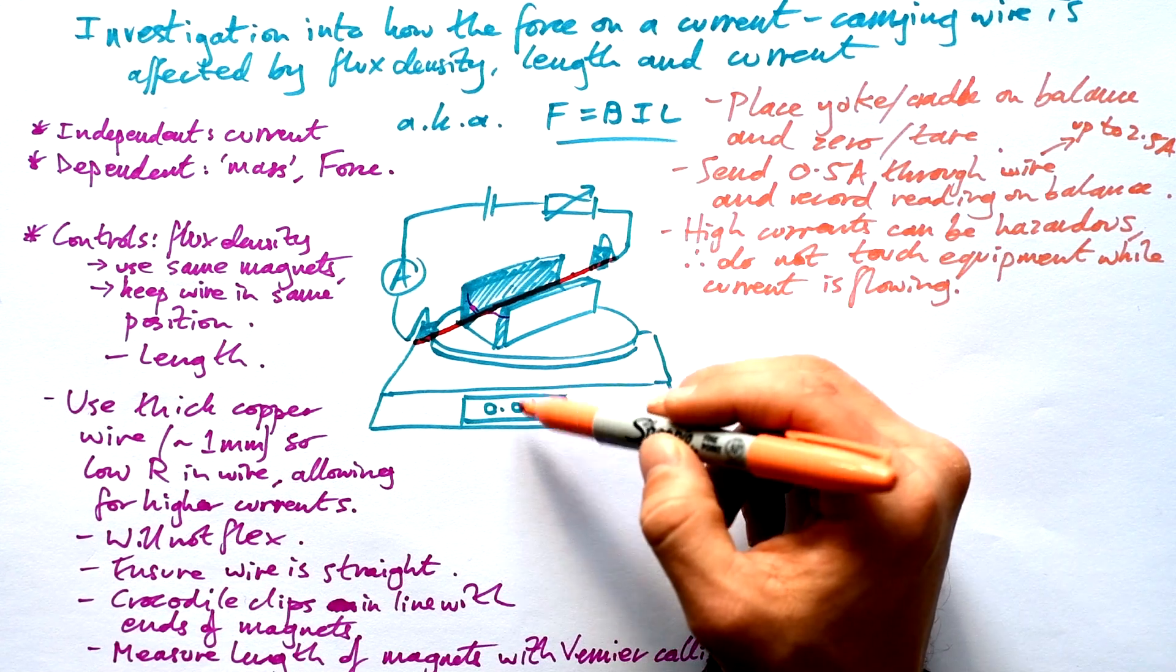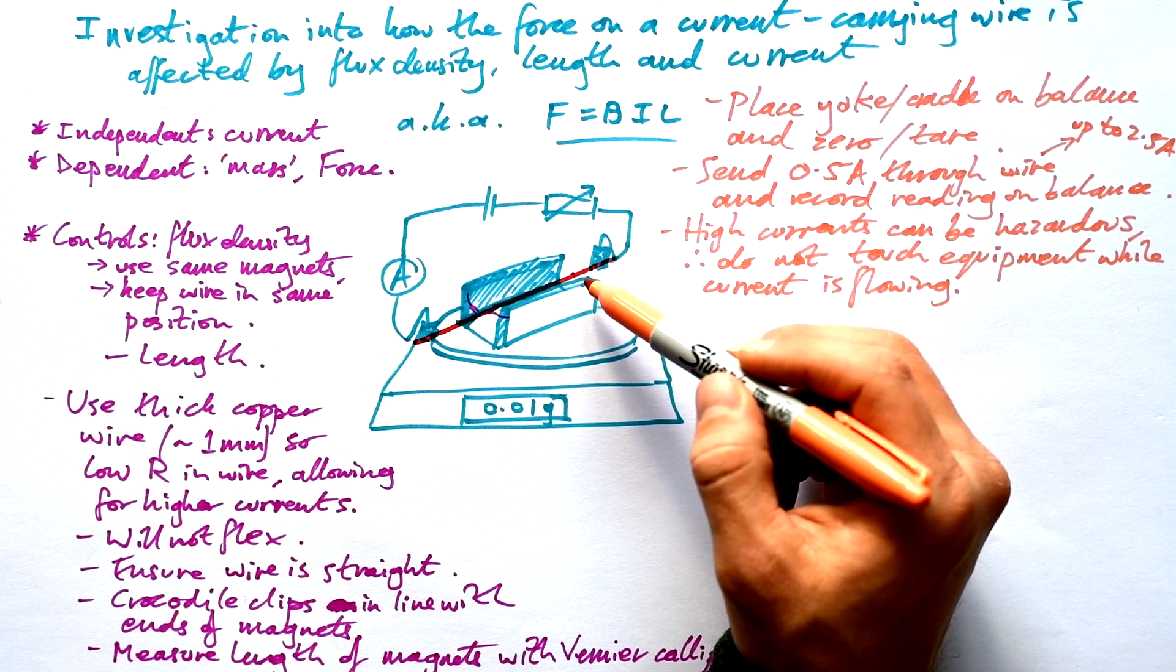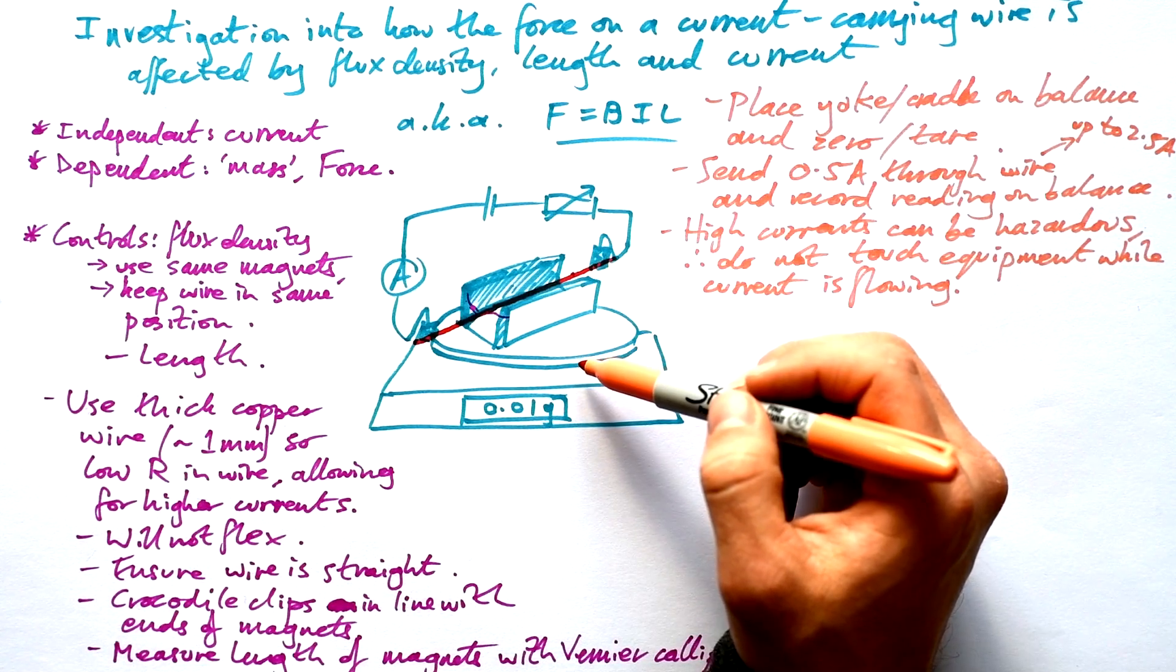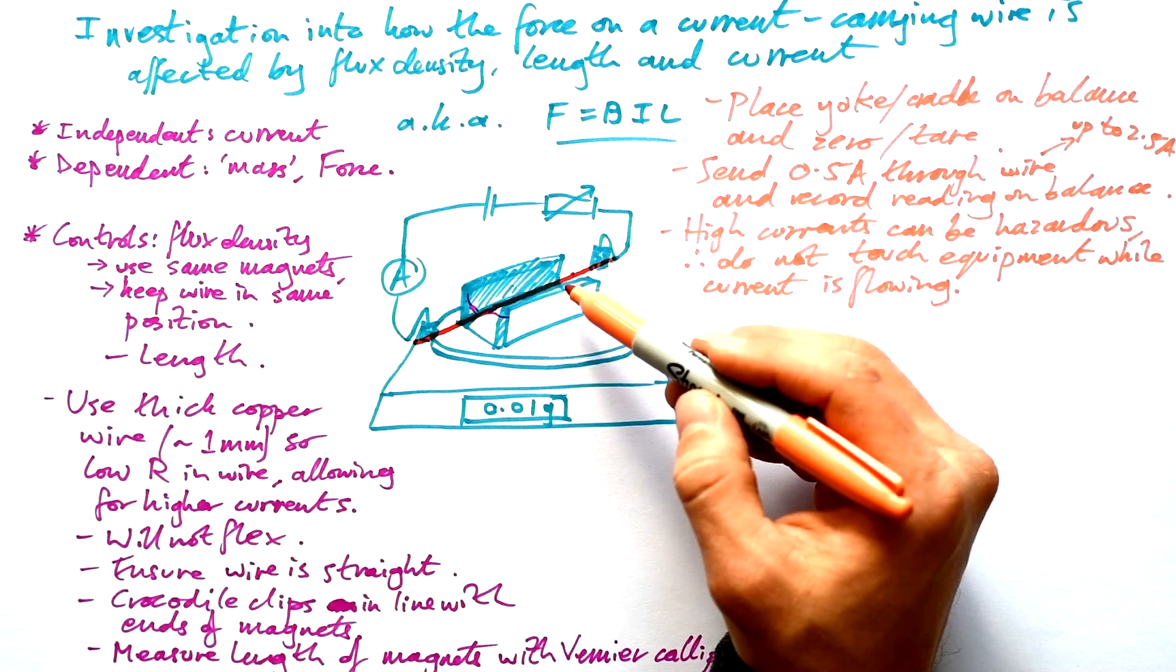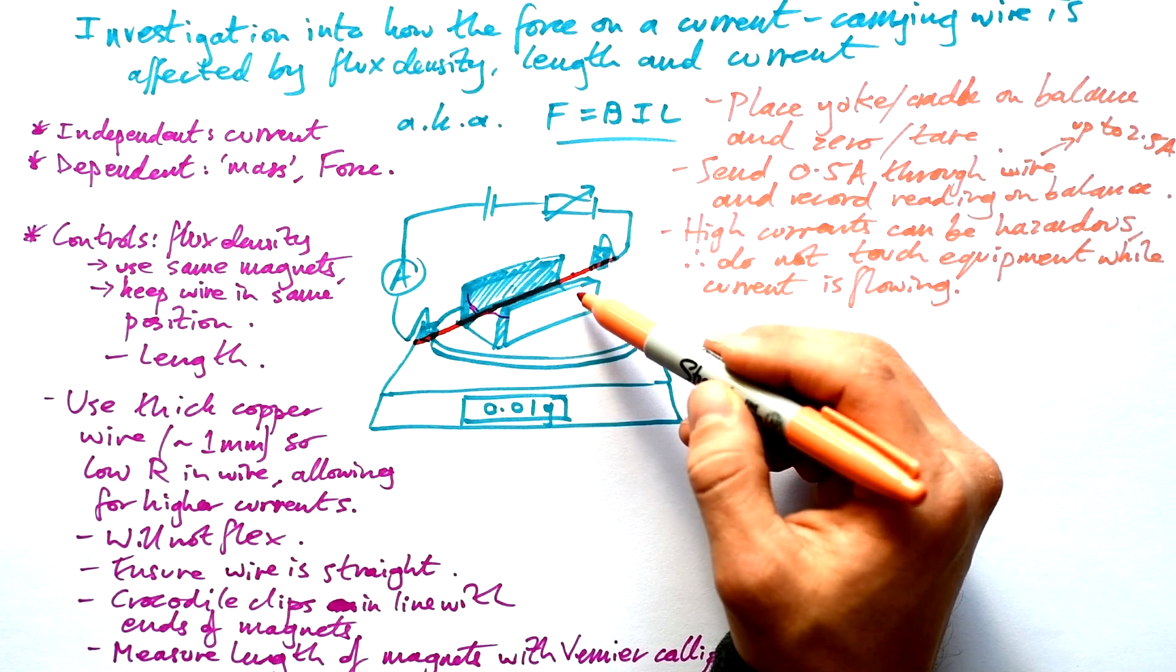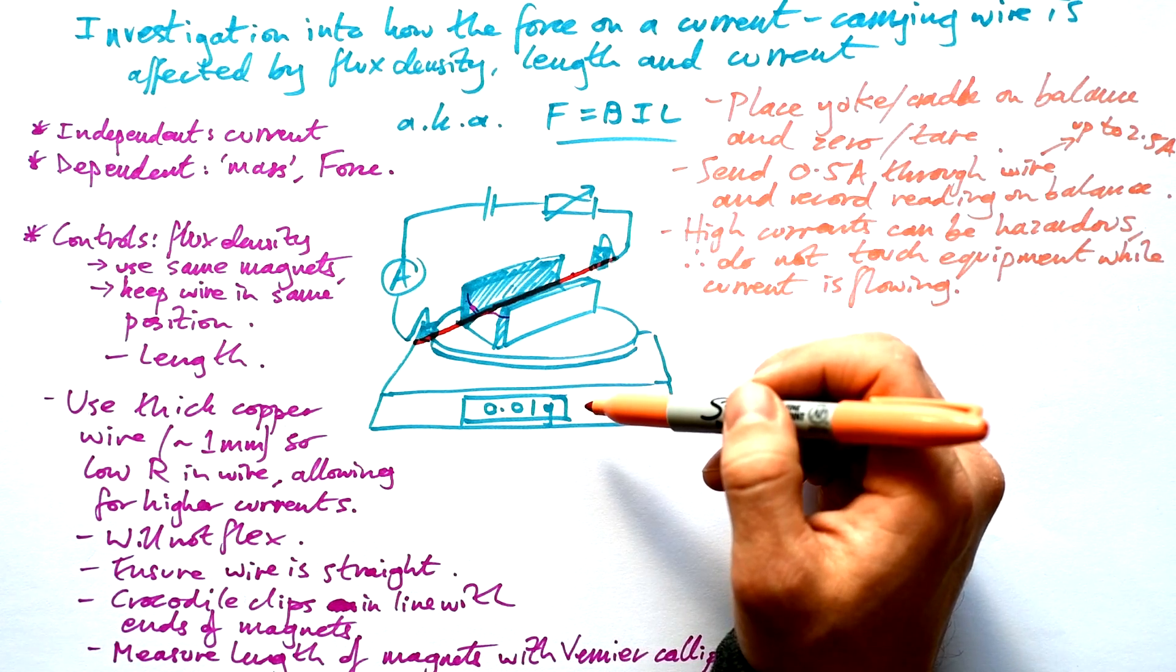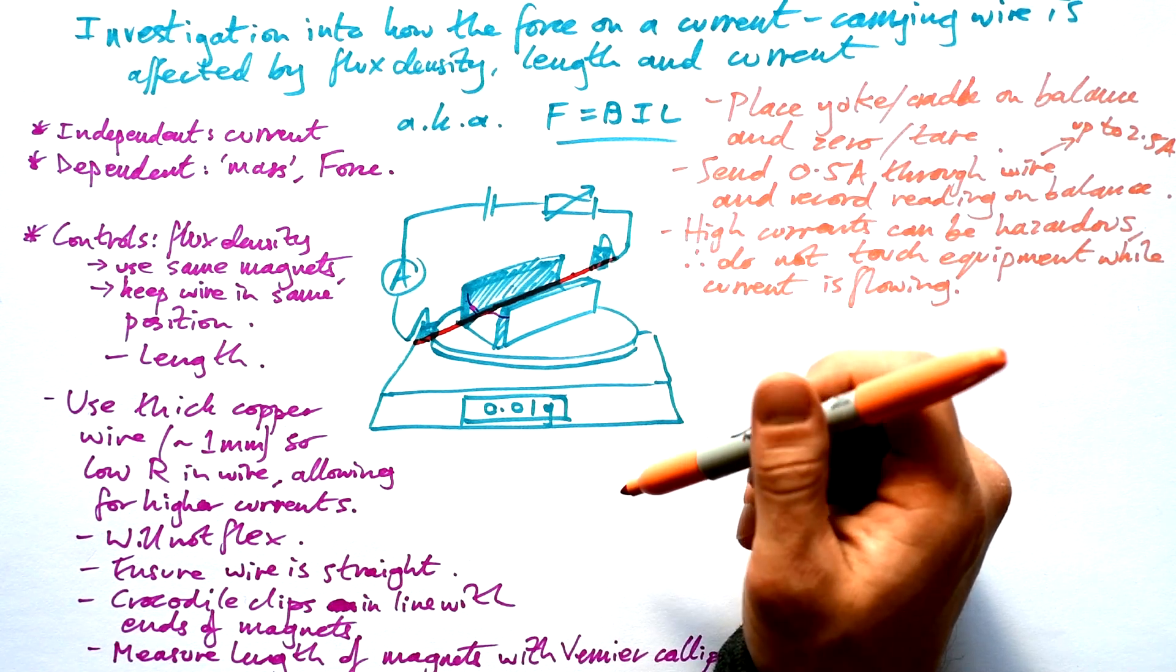Ideally you want a positive reading. You want the force on the wire to be upwards which then pushes the yoke and the balance downwards. However if you do get a minus number then that just means that the wire is pushing down, so the wire is pulling the yoke up and so it's getting rid of some of that mass as it were on the balance.